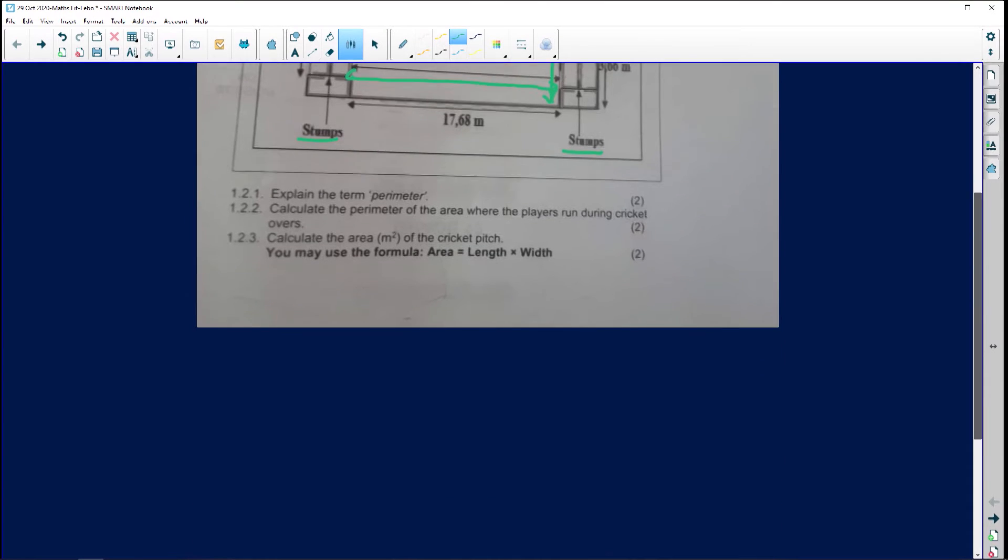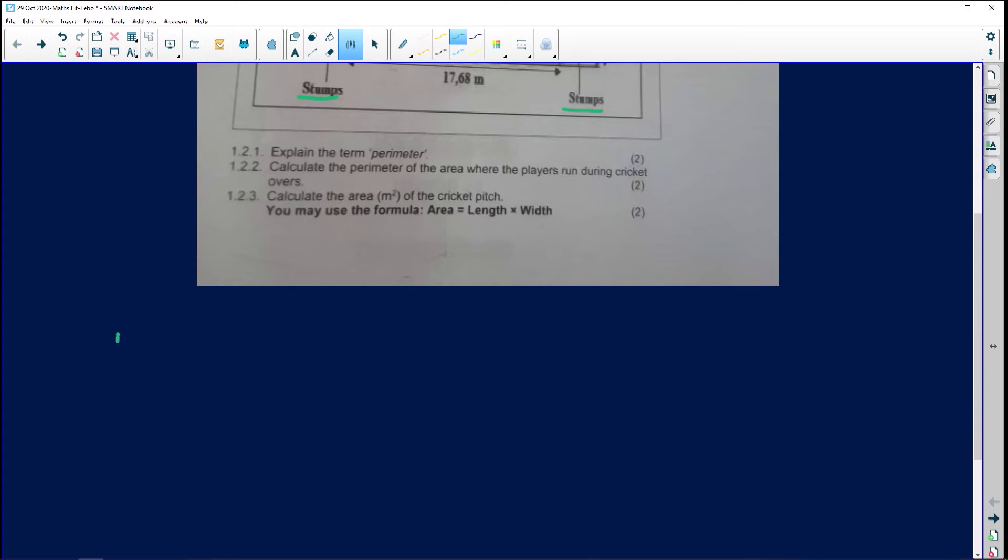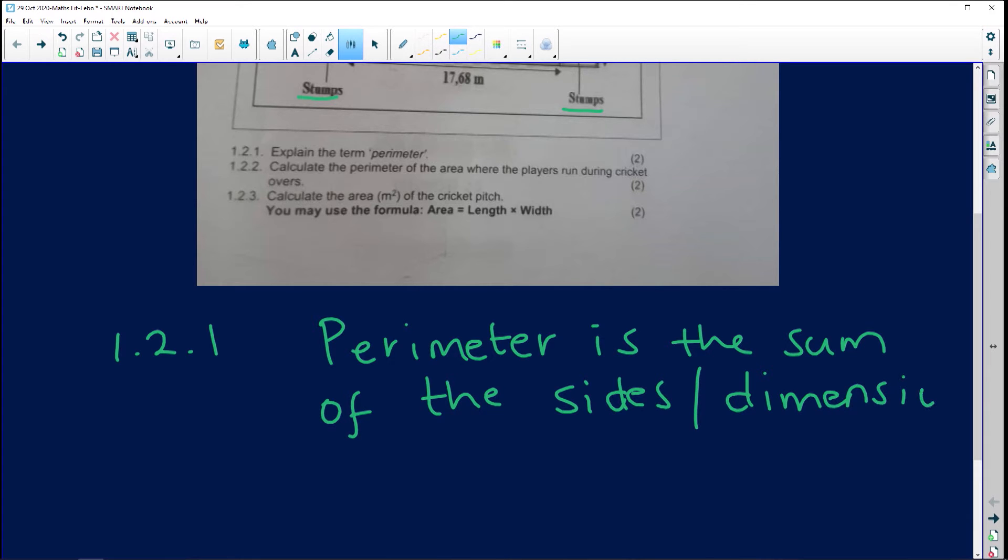So that's going to be 1.2.1. Perimeter is the sum of the sides or the sum of the dimensions. Anytime you hear the word dimensions, they just mean sides guys. It's just a fancy word. You know sometimes they'll have those fancy words there. So now we know what perimeter is.